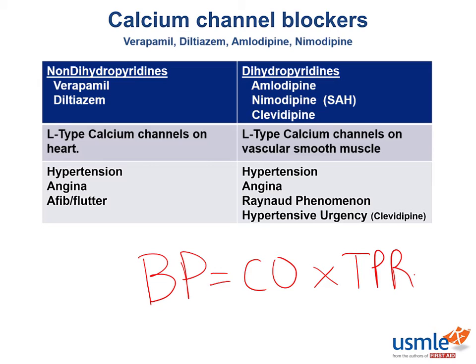Medications like nicardipine and clevidipine are useful in hypertensive urgency because they have a fast onset and short duration. You want to quickly drop these patients' blood pressures, but if you overshoot, you also want the drug to be metabolized quickly so that you can readjust your dosing regimen.